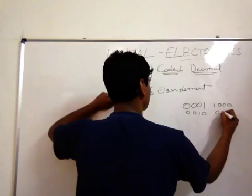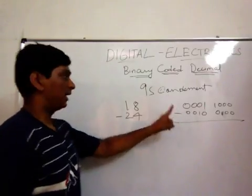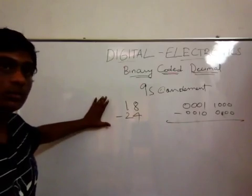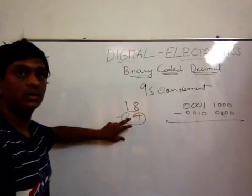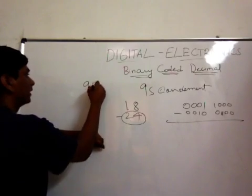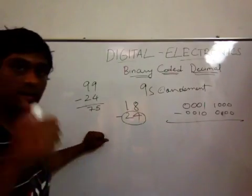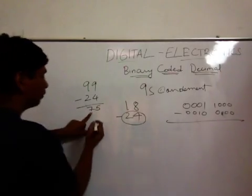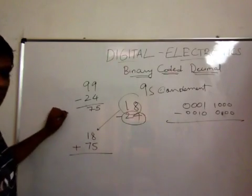Say you have the BCD representation: 0001 0000 0010, and 0000 0010 0100. This represents 18 minus 24. I need to find the 99's complement of 24, so 99 minus 24 equals 75. Now I add 18 and 75.